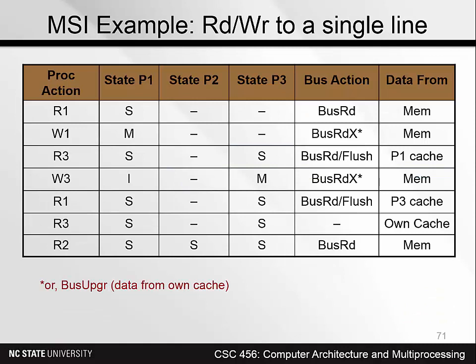This table shows which caches have the block in which state after each instruction, and which bus action takes place at each step. We've assumed that when a line changes from state S to state M, a bus read X is issued. But our system might also support a bus upgrade transaction, in which case the line can change state without the block having to be sent across the bus to the requesting processor. Also, notice where the data comes from — it comes from memory, except in the case of a cache hit or when the up-to-date copy resides in another cache.